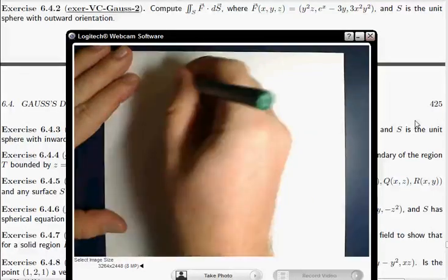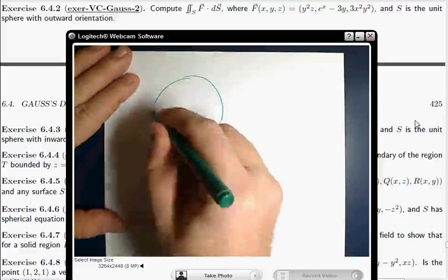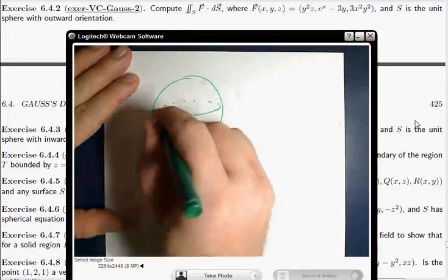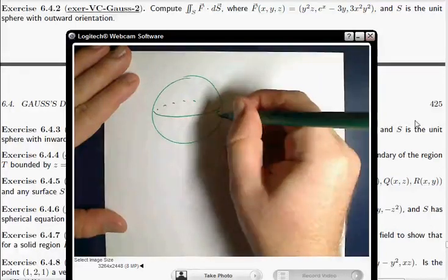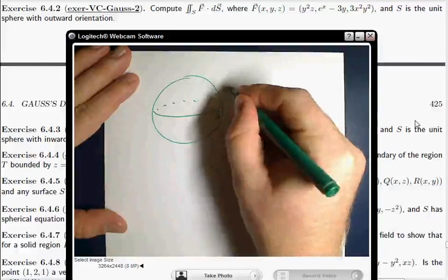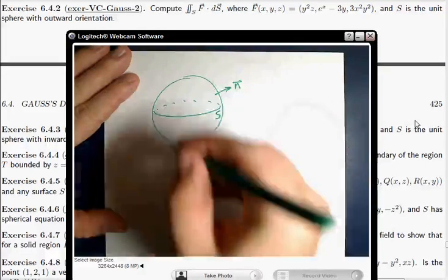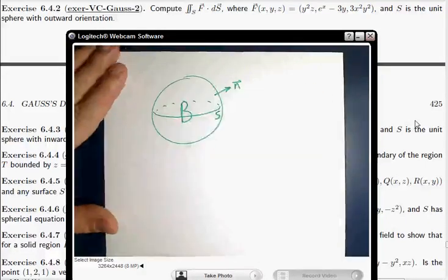Well, that sphere, conveniently, is a boundary of something. Right, this sphere here, and since it has an outward orientation, that sphere is exactly the boundary of this ball.